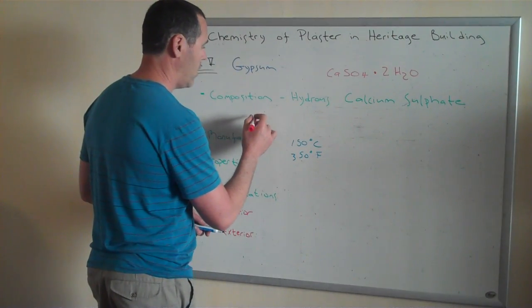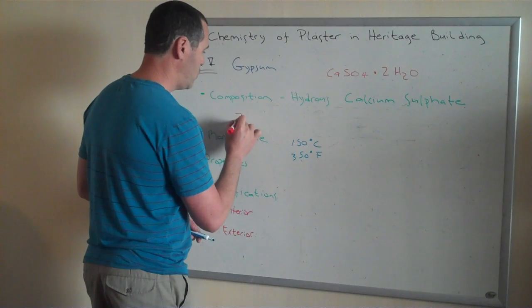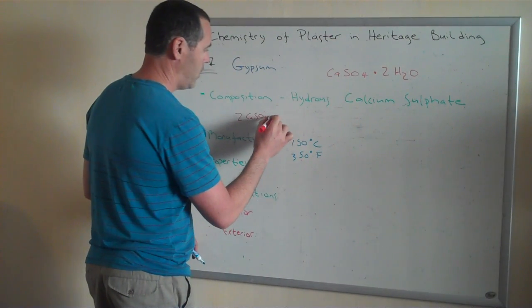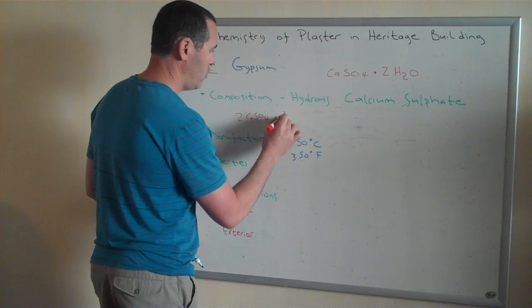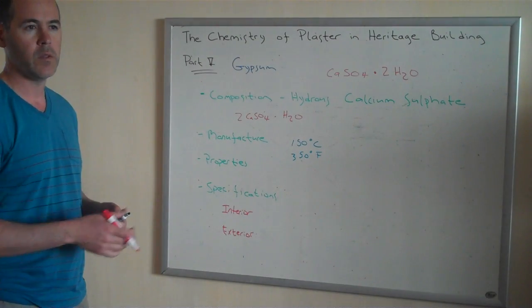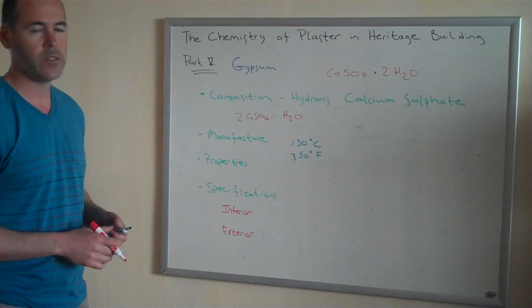Two parts calcium sulfate and attached to one part water. So essentially, three quarters of the water dissipates during the baking.